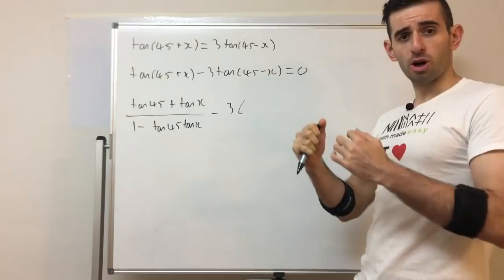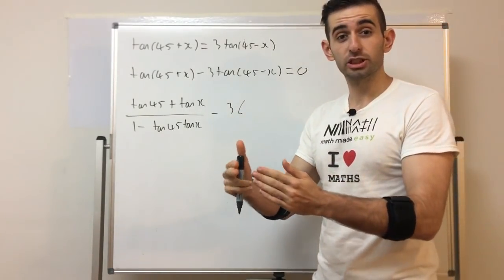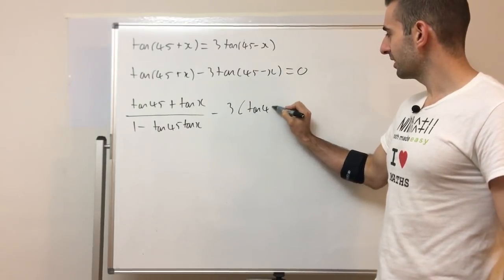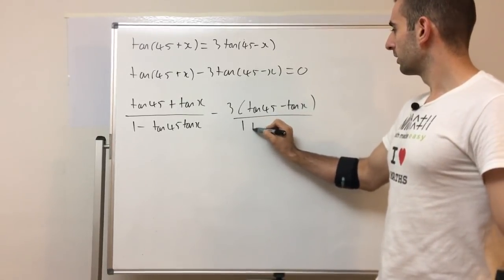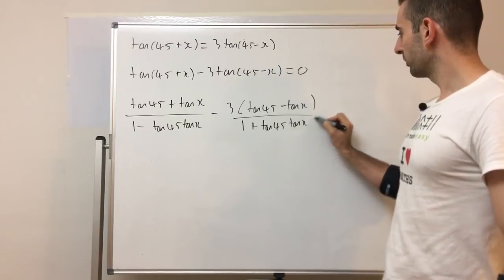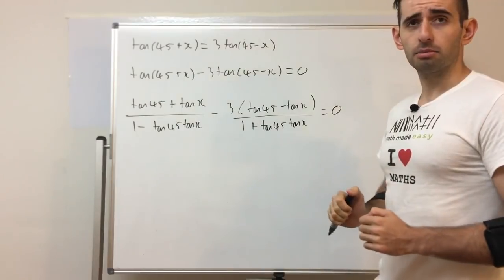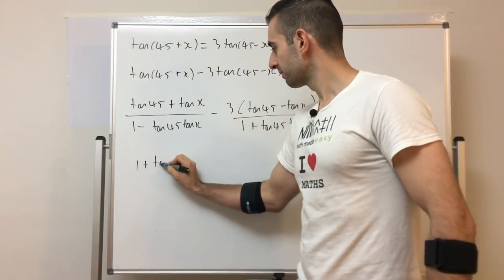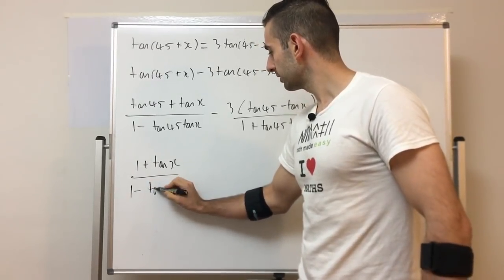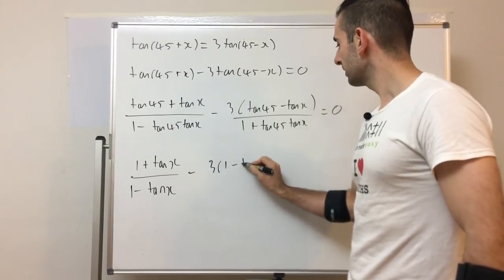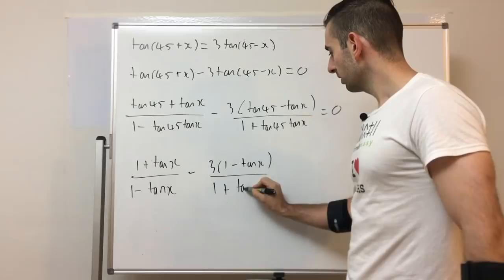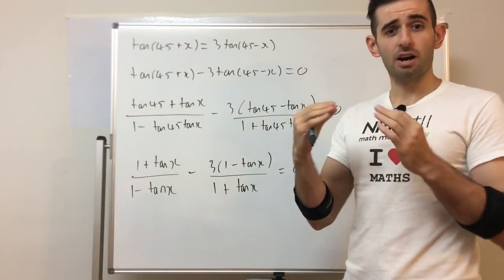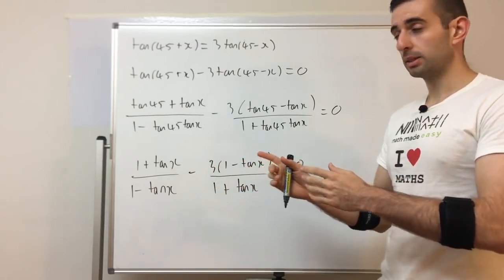You should know the compound angle and double angle identities before watching this — you're here because you're stuck on how to solve these equations. Substituting the identity in, and using the exact value tan45° = 1, we get (1 + tanx)/(1 − tanx) minus 3·(1 − tanx)/(1 + tanx) = 0. To simplify and factorize, we need to get rid of fractions by multiplying everything by the lowest common denominator — essentially cross-multiplying.